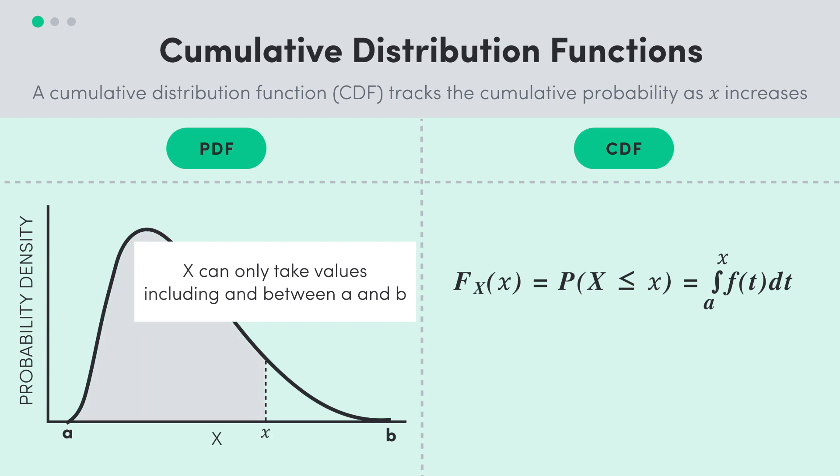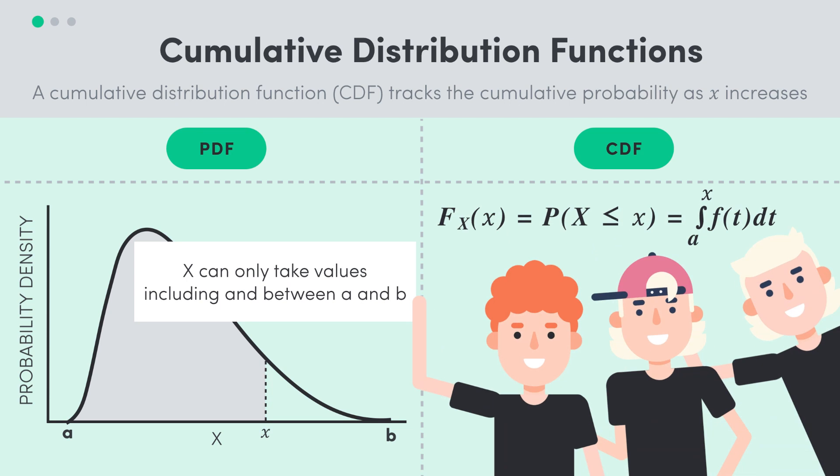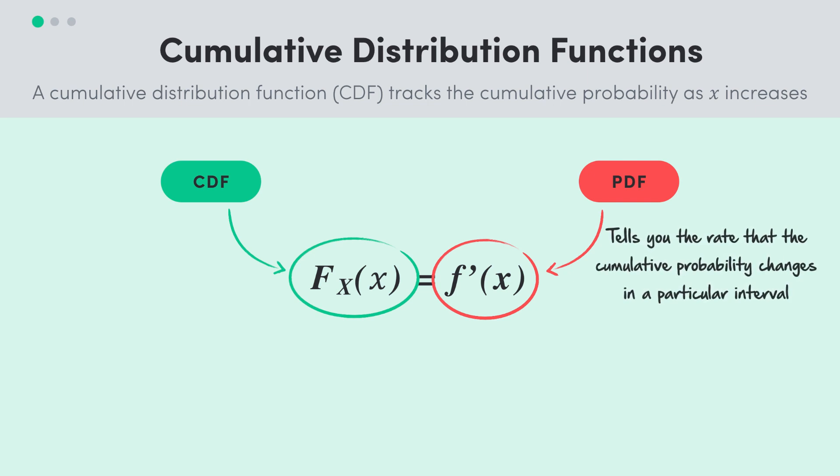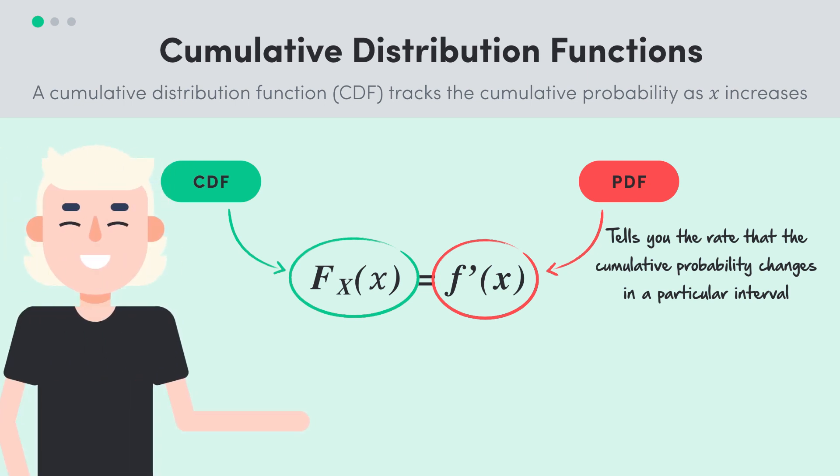In this case, the lower boundary is a because our random variable cannot be less than a. And here we can see why I tried to make that awful family analogy at the start. We can see the CDF actually depends on the PDF. In fact, the PDF is actually the derivative of the CDF, with the PDF telling you the rate that the cumulative probability changes in a particular interval. A higher PDF means the cumulative probability changes quickly. As I said, that's not really important, I just thought you'd like to know.